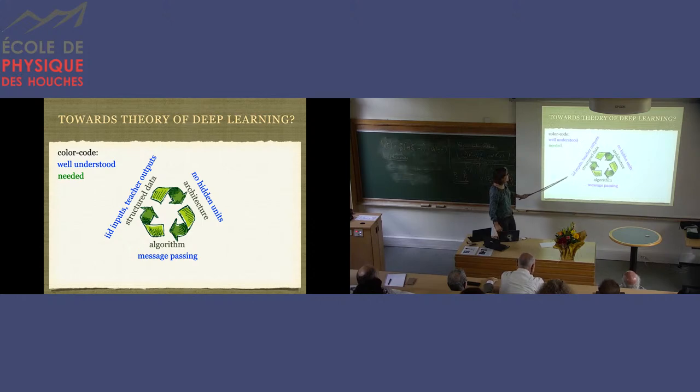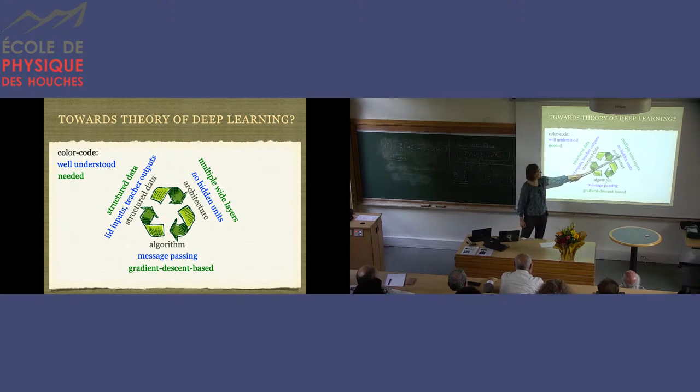So what I told you so far was just doing IID inputs, teacher outputs, no hidden units, message passing. So that's way too simple. And we would like to get to some reasonably structured data and multiple wide layers and understand what the actual gradient descent is doing.